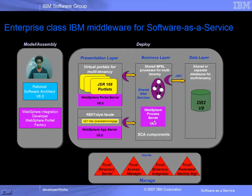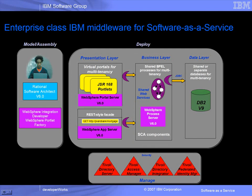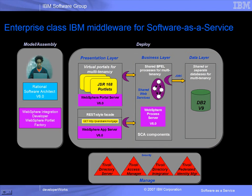This chart depicts IBM's enterprise class offerings which were used to build the sample Software as a Service banking application. WebSphere Portal Server version 6.0 was used to build virtual portals with configurable JSR168 standard portlets for supporting multi-tenancy. WebSphere Process Server version 6.0 was used to host shared SCA modules, BPEL processes, web services, and J2EE components for multi-tenancy. DB2 v9.1 was used to build shared databases. Multiple Tivoli security products, for example Tivoli Directory Server, were used to secure the Software as a Service solution.